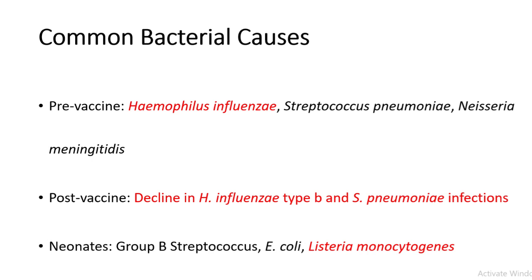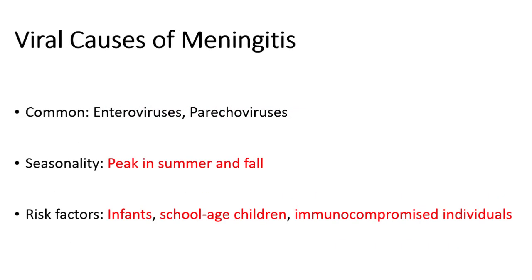In neonates, the most common bacterial causes are group B Streptococcus, often transmitted during childbirth, as well as E. coli and Listeria monocytogenes. Viral meningitis is more common than bacterial meningitis but generally less severe. The most common viruses responsible are enteroviruses such as coxsackievirus and echovirus. These viruses spread through fecal-oral transmission and are more common in summer and fall, especially in temperate regions. Other viruses such as herpes simplex virus, mumps, and Epstein-Barr virus can also cause meningitis, though less commonly.